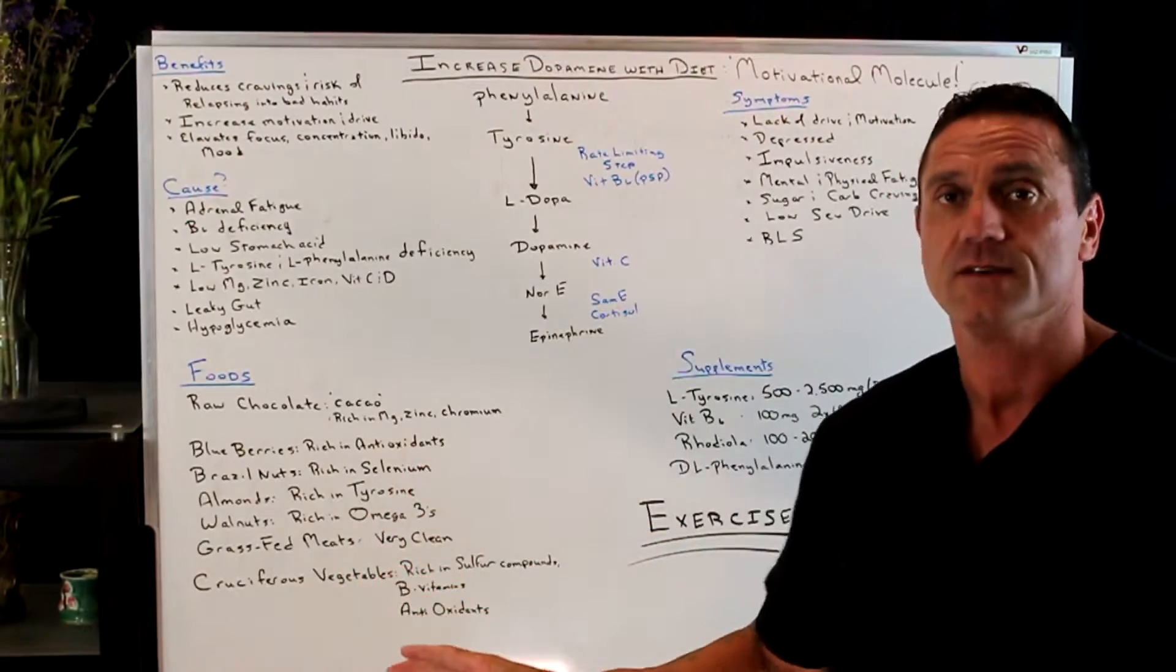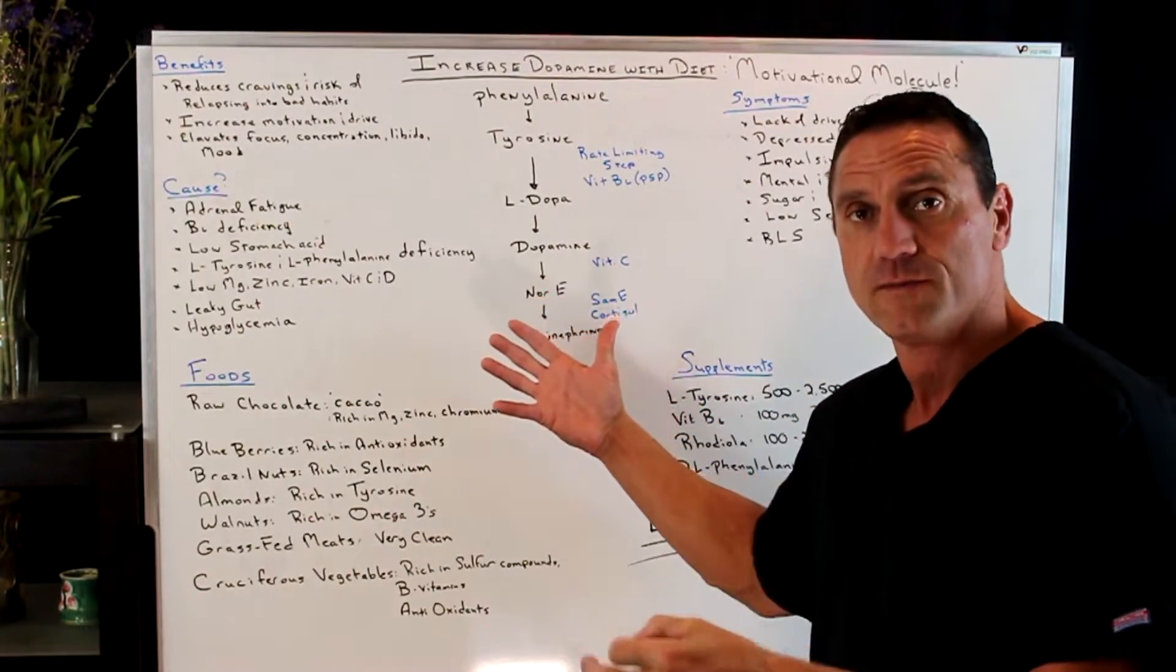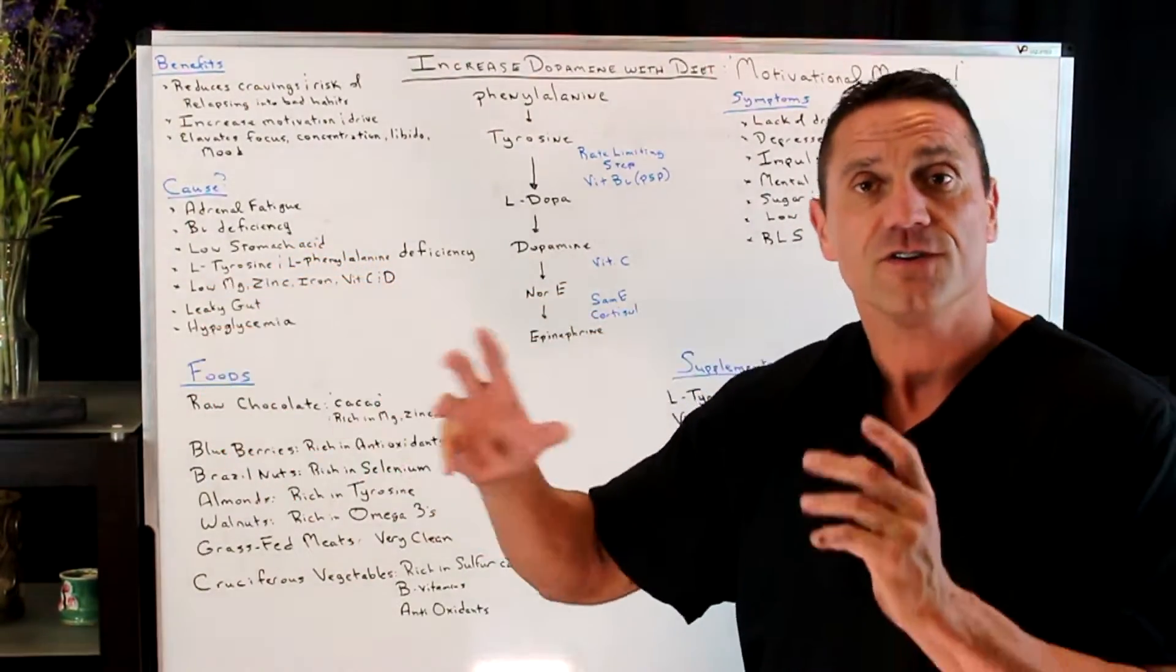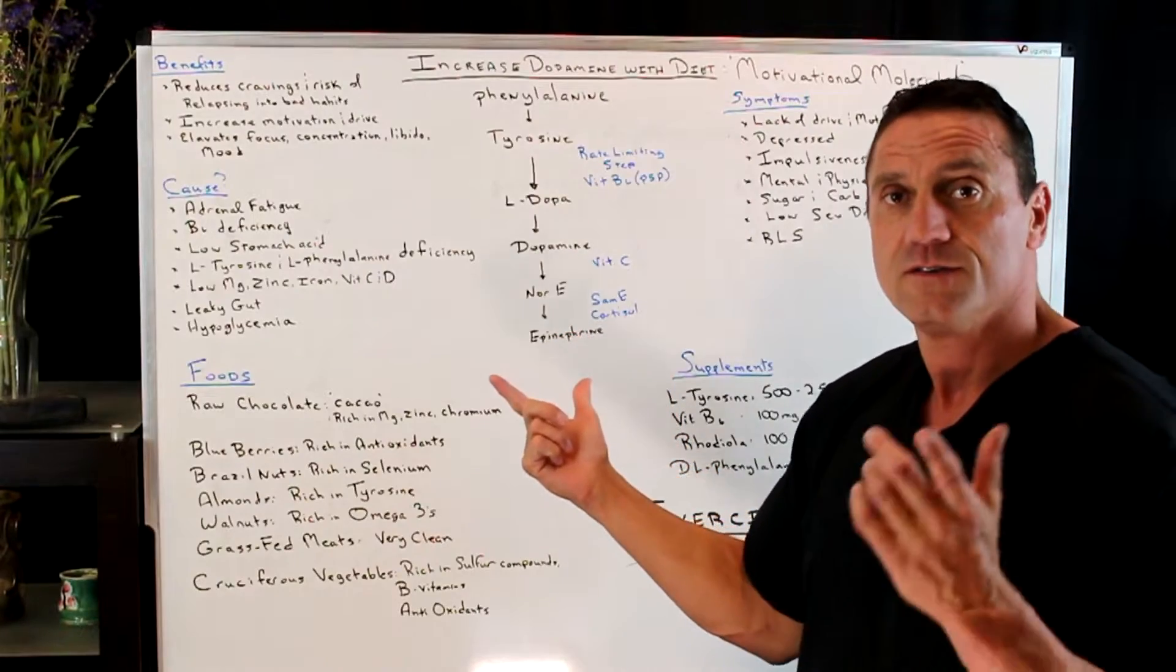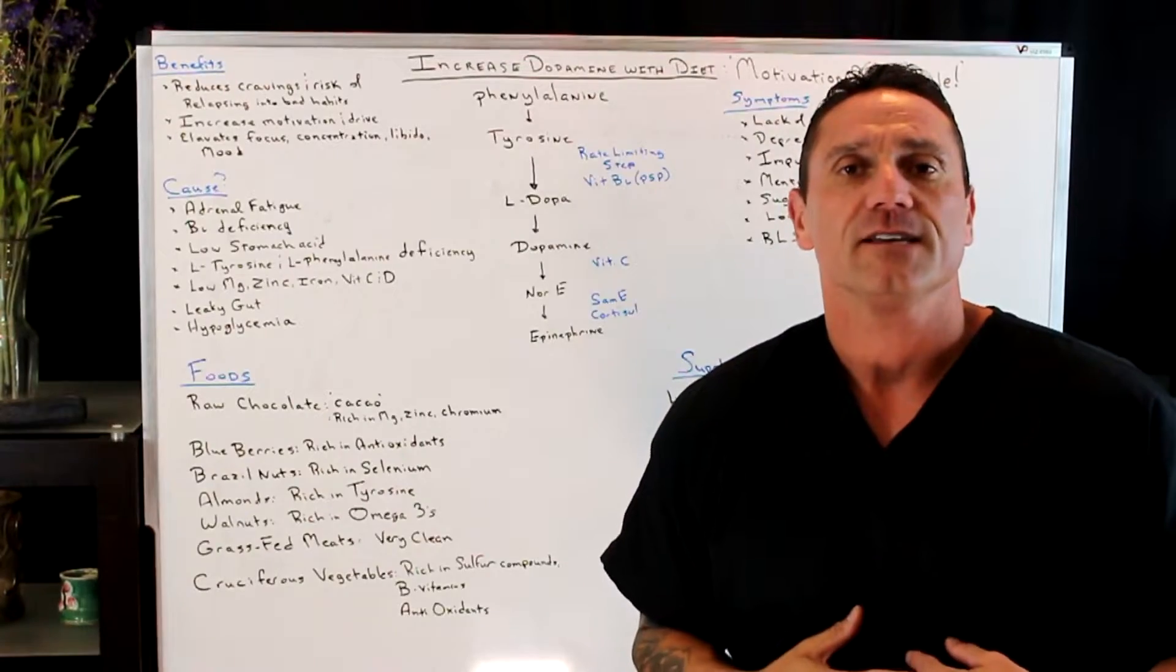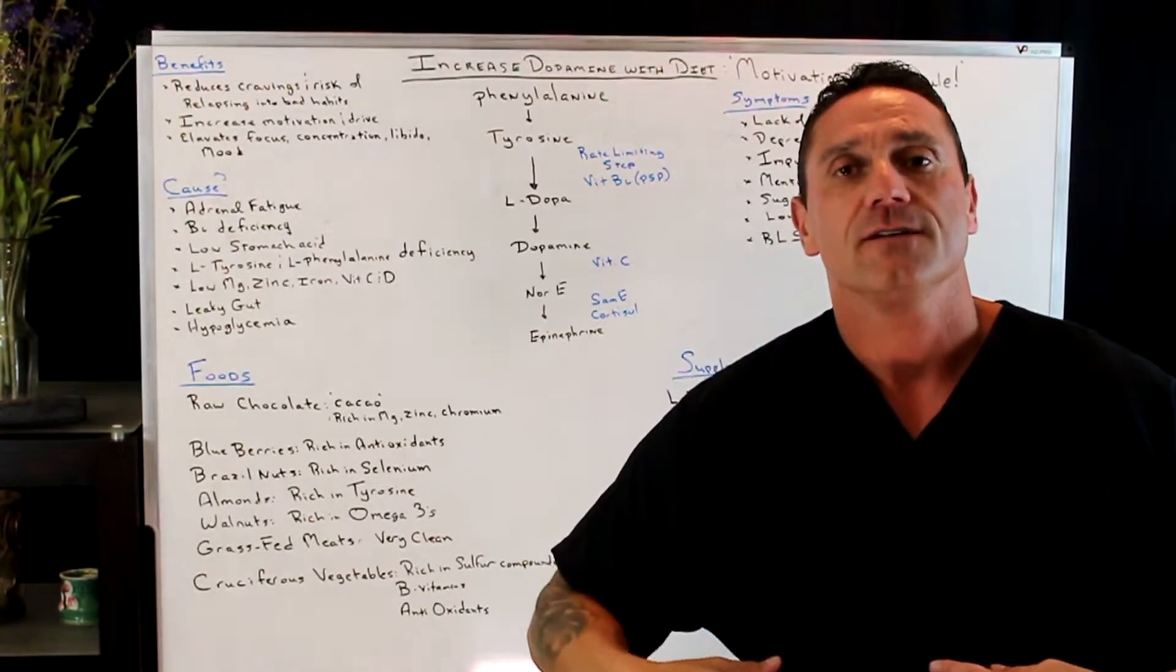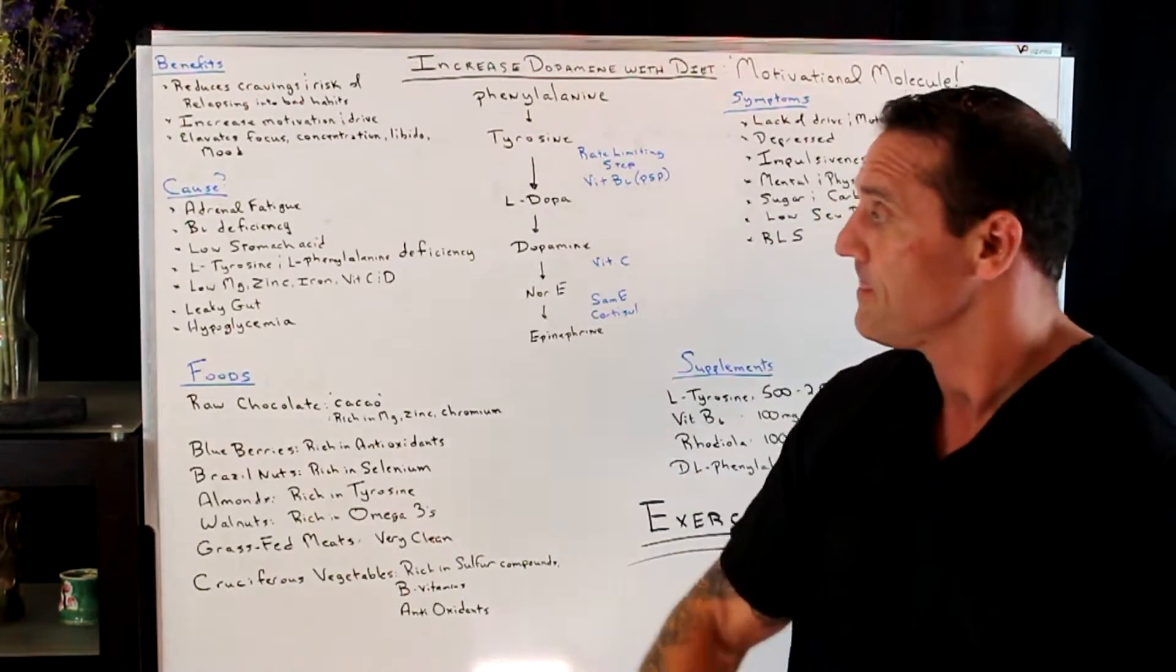So what causes you to have low dopamine levels? Because these are part of the adrenal hormones, if you have adrenal fatigue, you may be burned out on dopamine. B6 deficiency, you're not absorbing B6. And if you don't absorb B6, then you're not converting all this to usable dopamine. Low stomach acid. Why is that important? Because L-phenylalanine is an amino acid, and you get that from food. And if you have low stomach acid, you're not breaking down the food constituents properly for absorption to produce these chemicals.